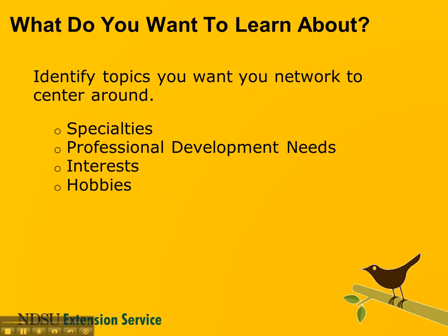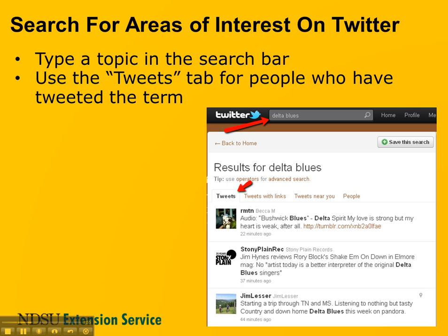So if we want to follow her, we just click the Follow button. Similarly, you need to ask yourself what do you want to learn about. Identify topics that you want in your learning network: your academic or professional specialties, professional development needs, areas of interest, hobbies, family and friends, geographic locations. What do you want your network to center around? Now you can take that list of topics and do the same thing we did with the people — go to twitter.com, log in, and type the topic into the search bar.